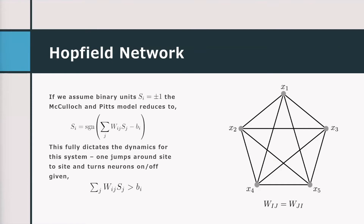A Hopfield network is basically taking a bunch of perceptrons and spreading them around in a connected format. You can imagine it as that perceptron picture from before, except now you have a bunch of them all connected to each other — that forms the basic graphical structure of a Hopfield network. The other assumption is that you have binary units on the nodes, so you can just imagine spin up or spin down.